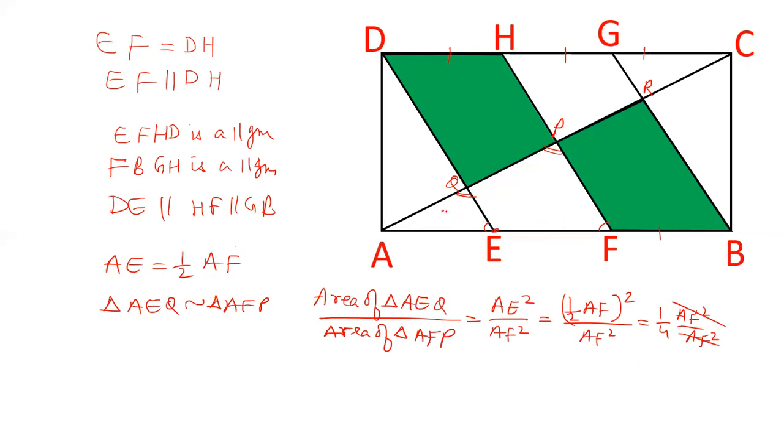So the area of AEQ is 1/4 of AFP. So let's take this area as x. Then area of AFP will be 4x and therefore this part is 3x.